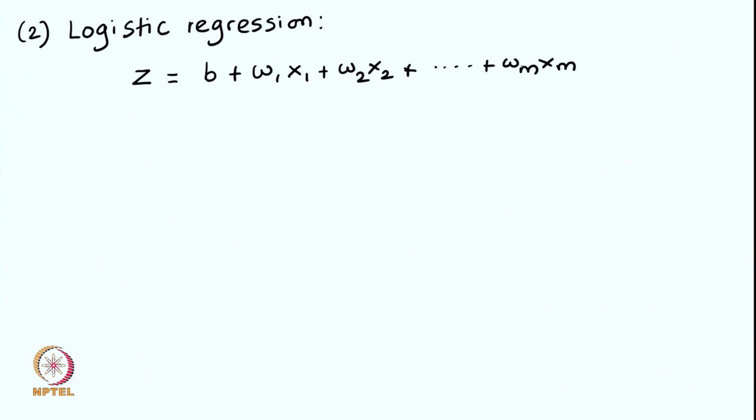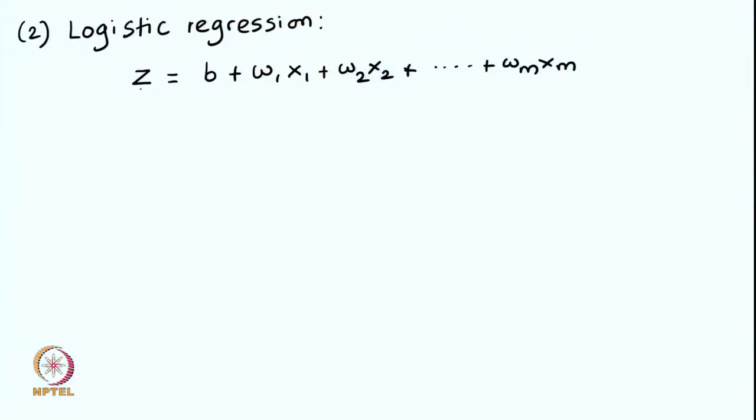The linear combination of features and parameter values gives us z, and our job is to take this real number and convert it into a discrete quantity. For example, we want to predict whether a particular house will be sold or not. Here, the label is 1 if the house will be sold and 0 if not. We have all the features of the house and based on that we want to predict whether the house will be sold. What we can do is create a linear combination of features and parameters to get this intermediate representation z, which is a real number, and we want to convert this real number into a discrete quantity between 0 to 1. We have a special function called the logistic function that comes to our rescue.